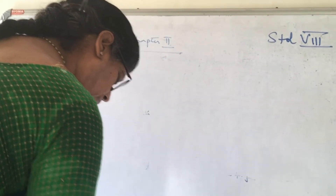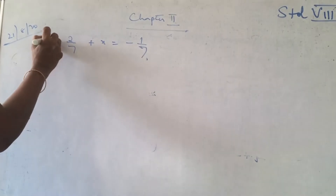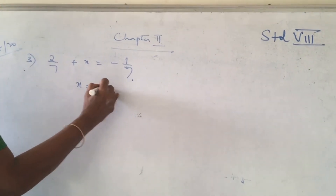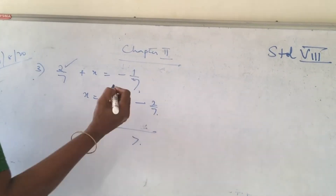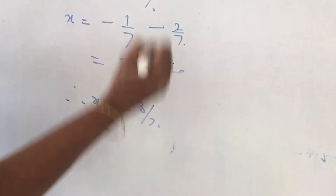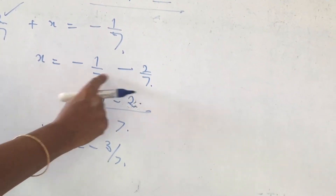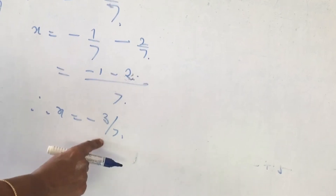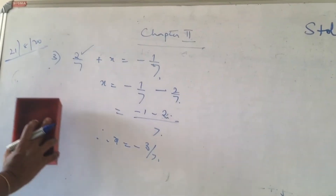Next question: 2 by 7 plus x is equal to minus 1 by 7. When there are denominators, take 2 by 7 to the right side. What does it become? Minus 2 by 7. Common LCM is 7. Minus 1 minus 2 is minus 3. Therefore, x is equal to minus 3 by 7.